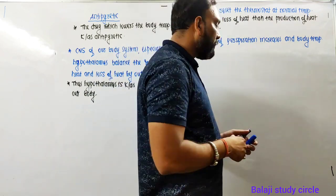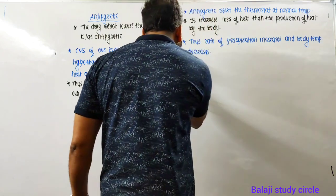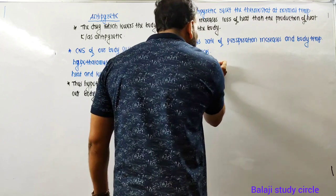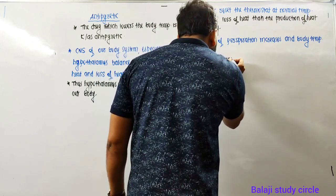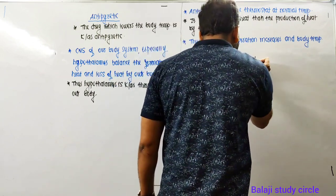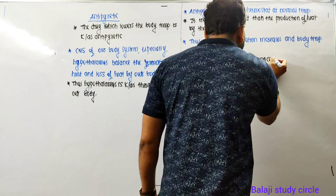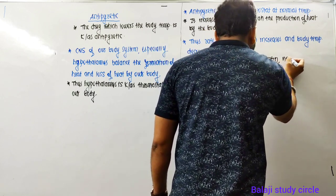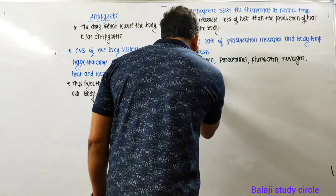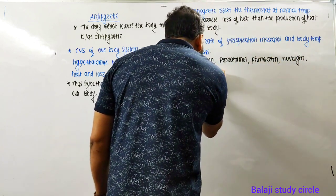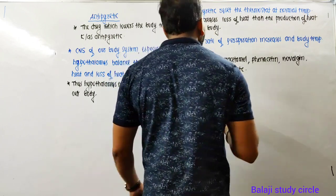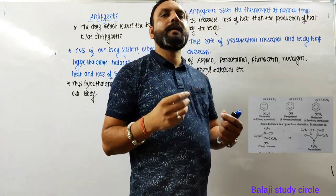Some examples of antipyretic drugs are: Aspirin, Paracetamol, Phenacetin, and Phenylbutazone. These are the famous antipyretic drugs.